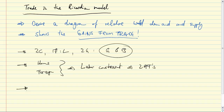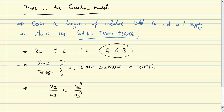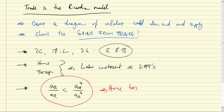We make an additional assumption, namely that the relative labor input requirements at home in the butter sector are lower than abroad, so that AB over AG is less than AB star over AG star, and home has the comparative advantage in butter production.